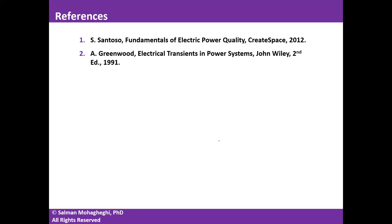These are a couple of good references to look into. The book by Santoso has a chapter dedicated to power system transients. The book by Greenwood is a standard textbook for transients in power systems, with many examples and case studies. What we talked about today is a limited number of examples of common transients in power systems, but if you're interested in knowing more, Greenwood has a lot of examples and case studies.